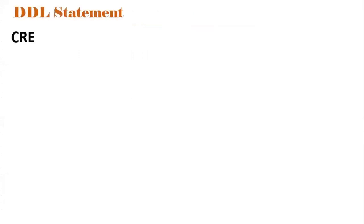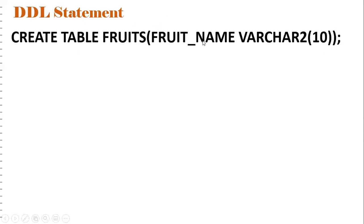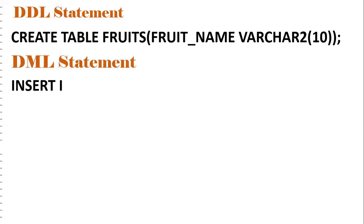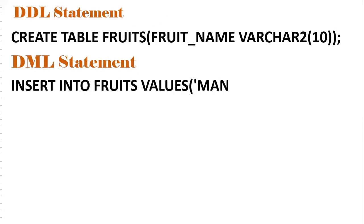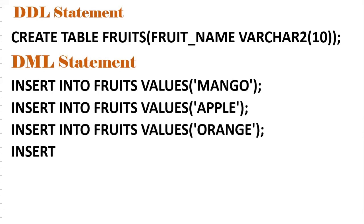Now the DDL statement: by using the create statement, I'm going to create a fruits table. Create table fruits, having only one column that is fruit_name. Then DML statement: by using the insert statement, I'm inserting few records - one is mango, one is apple, one is orange.